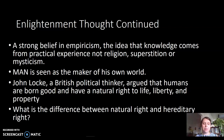One of the thinkers central to this era of enlightenment, and particularly important for our discussion of the American context, is John Locke—a British political thinker who came up with the idea of natural rights, which becomes really central to the way the founding fathers are thinking about the values of the early United States. John Locke states that humans are born good and have a natural right to life, liberty, and property. So unlike religious ideas requiring baptism to become good, Locke says everybody's born good and born with these rights.